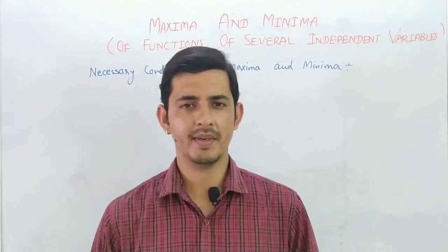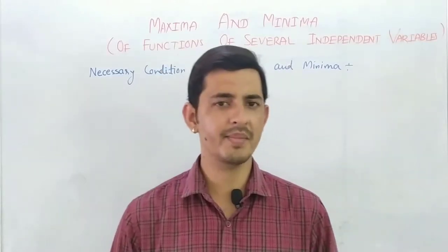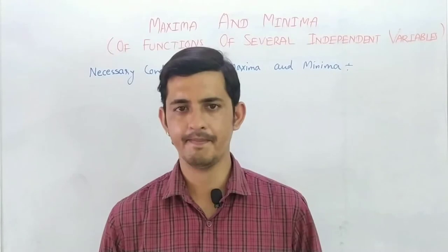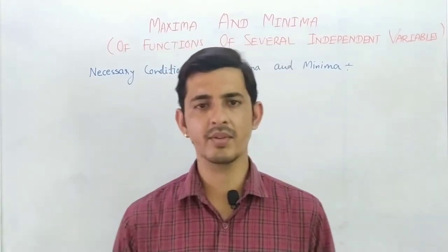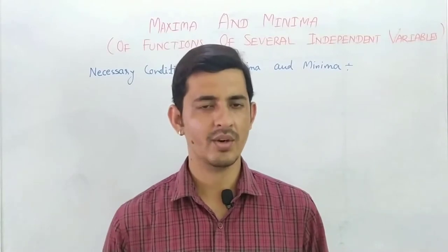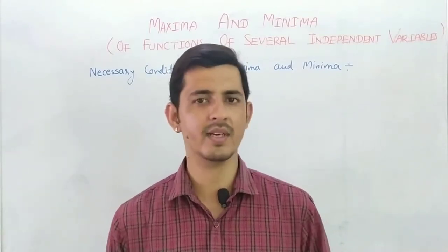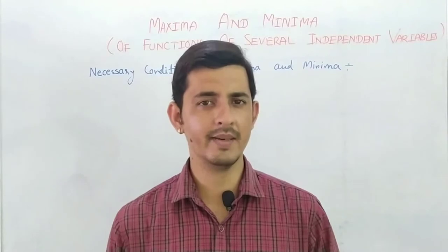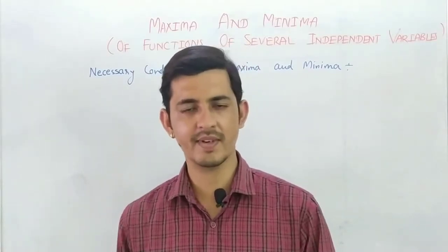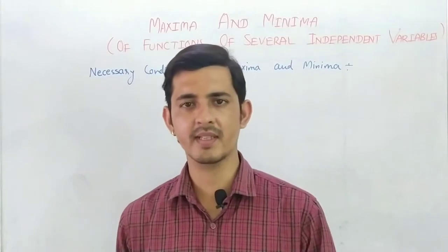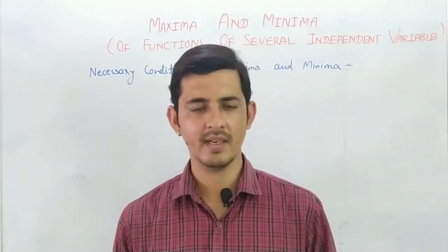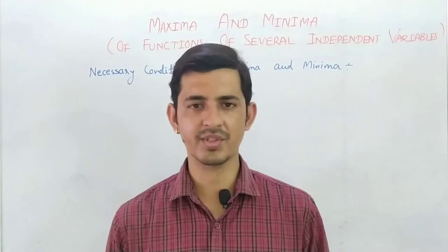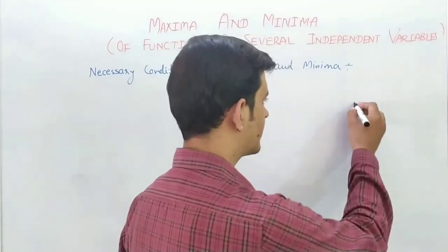Maxima and Minima — you have also read this topic in Class 12. In Class 12, we had two variables. If we were given any equation, we would differentiate it, set it equal to 0, and take the value of x. After finding x, we would get the stationary point. After the stationary point, we would differentiate the equation again. If the second derivative was negative, we would call it maximum; if positive, we would call it minimum.